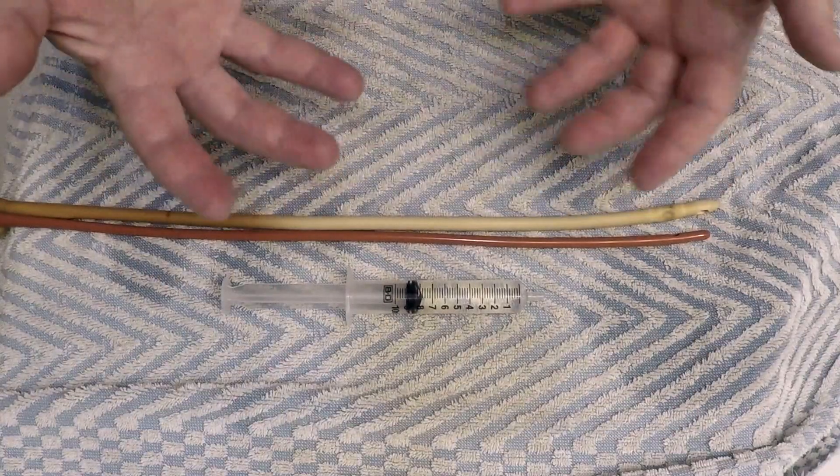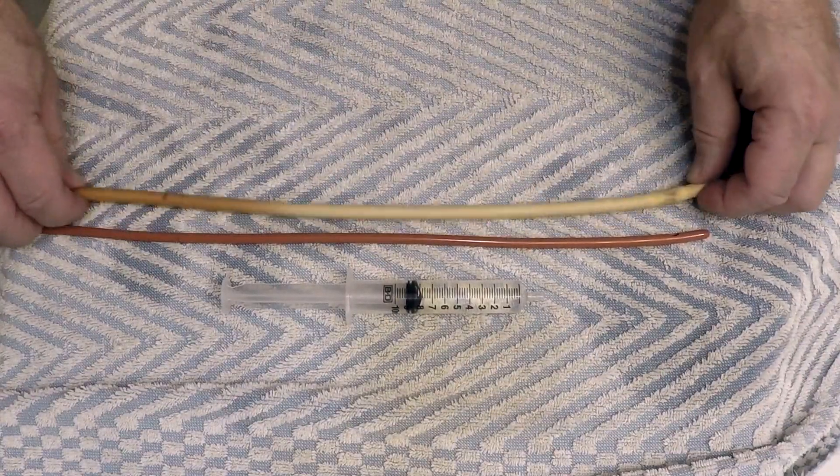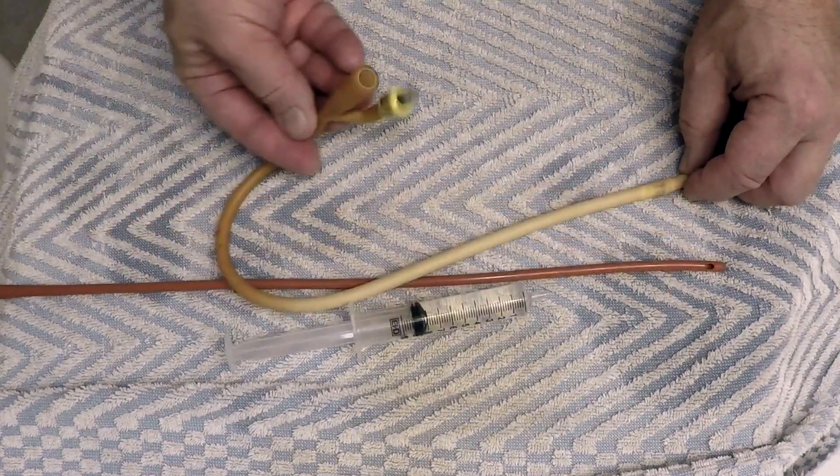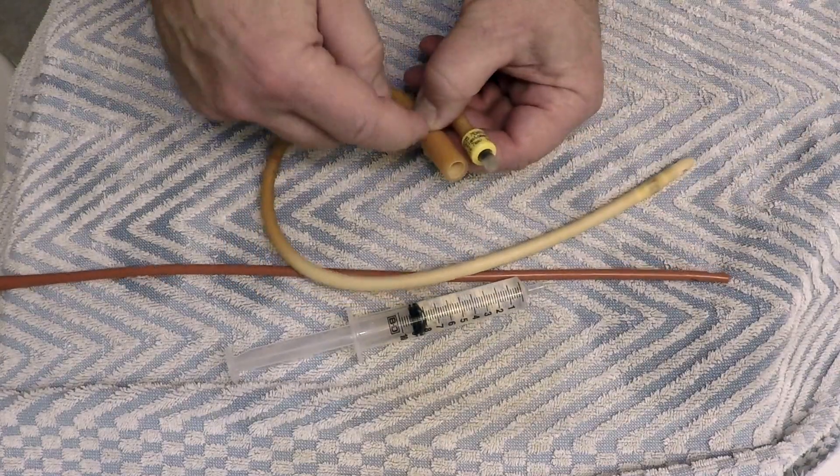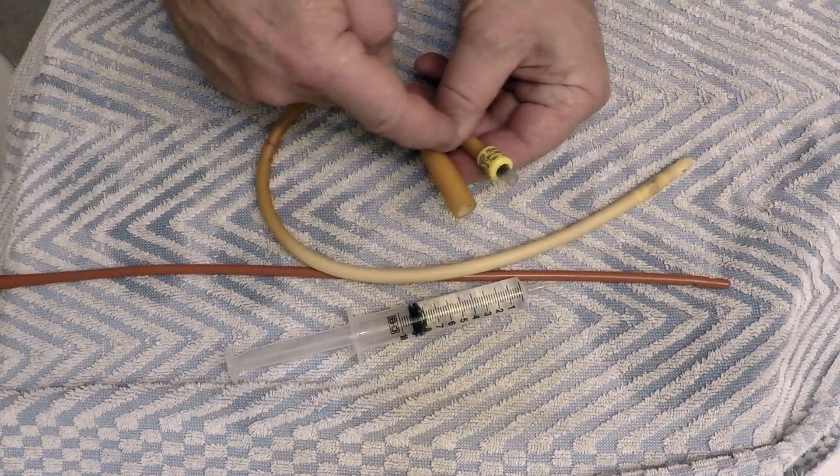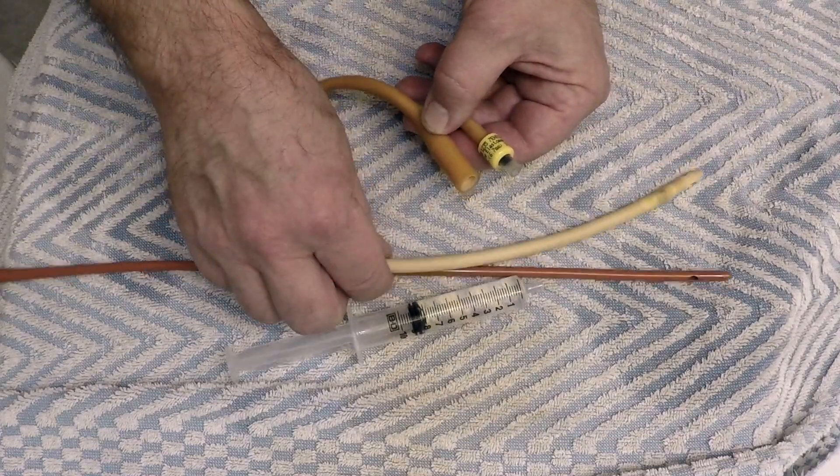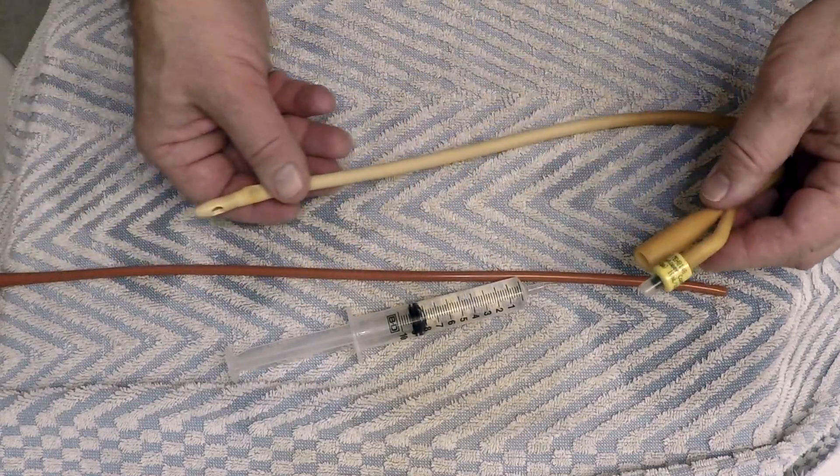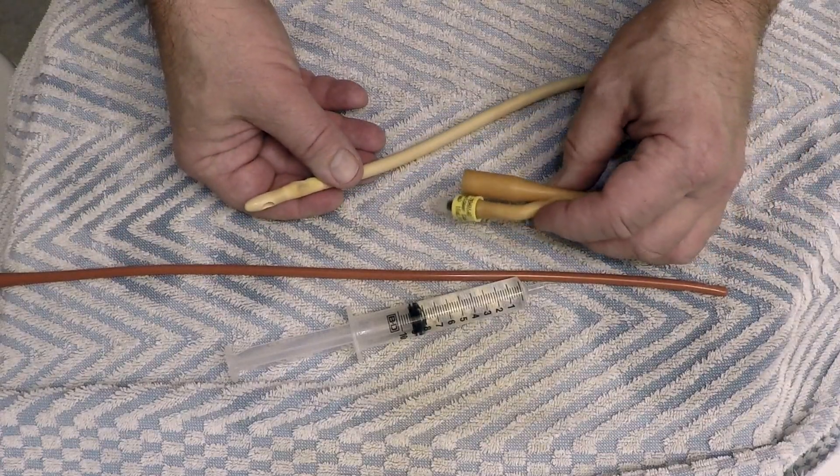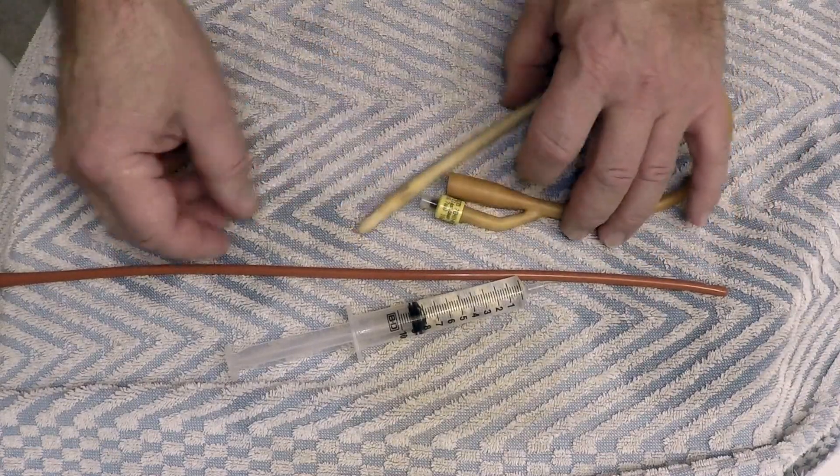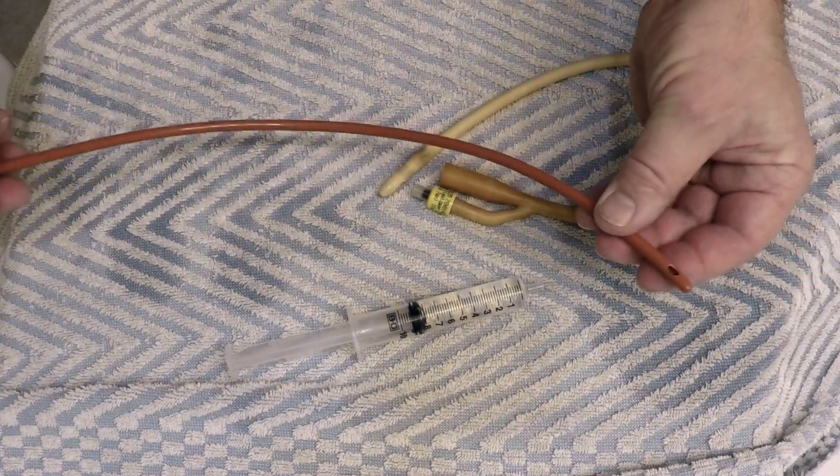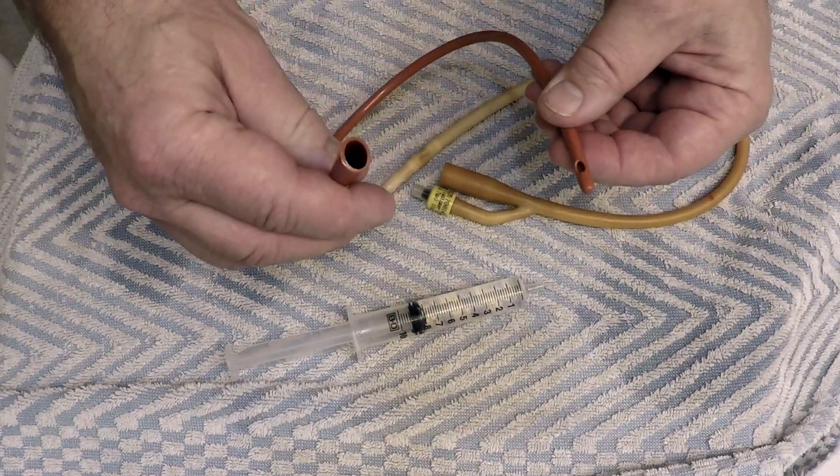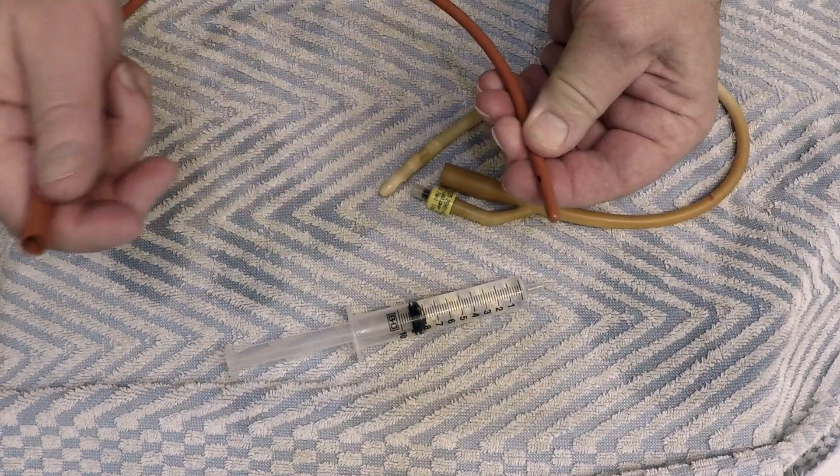So there you have it, the Foley catheter. Foley means that it has two tubes on the inside. One is for draining, and this one is a separate tube that goes all the way to that little bulb. It was invented by a guy named Mr. Foley a hundred years ago or more, probably more.